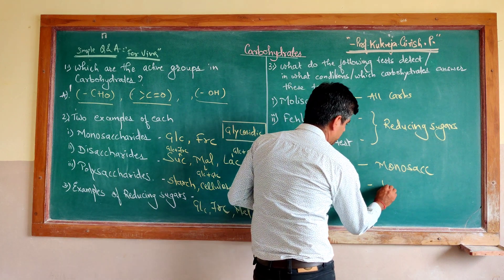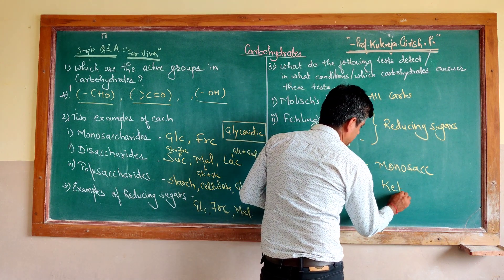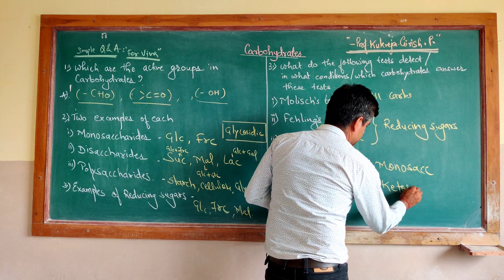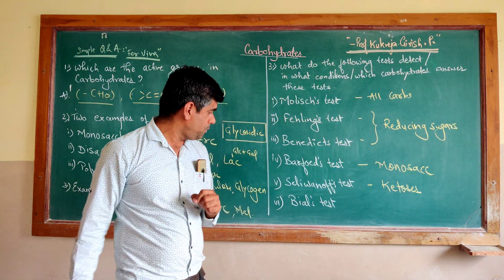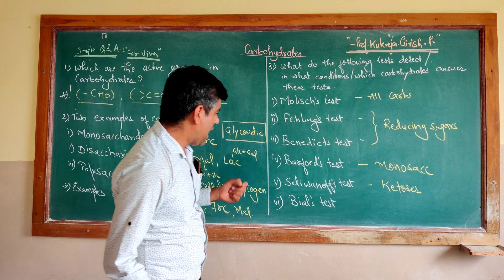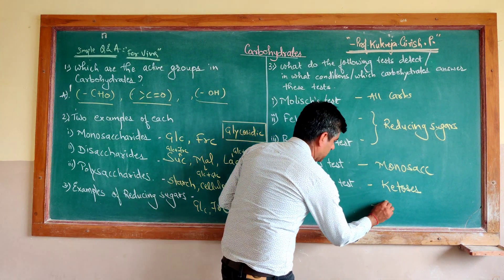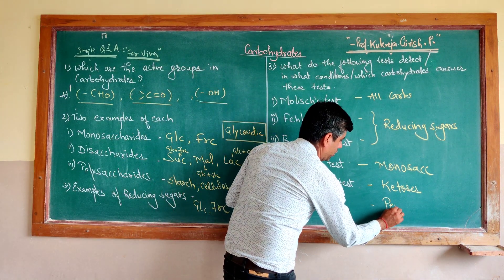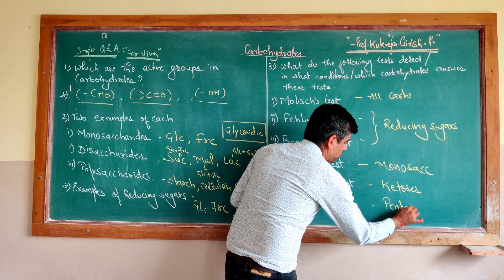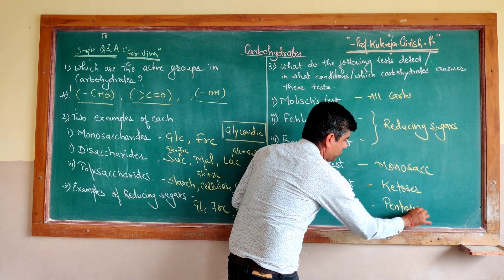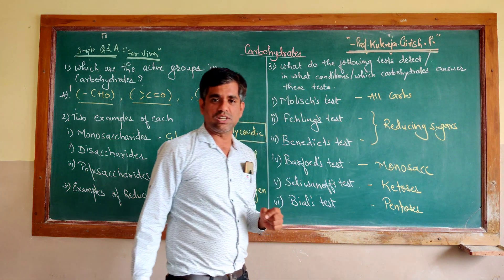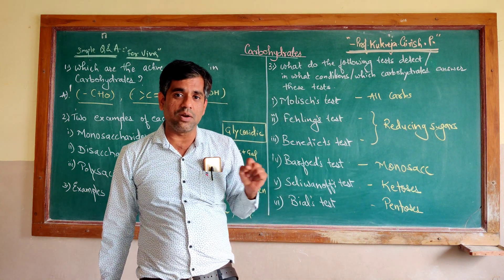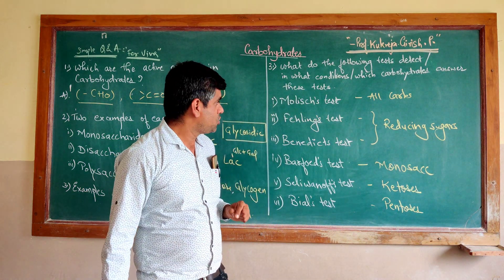The Seliwanoff's test is specific for ketoses — those which contain the ketone group. And the Bial's test is specific for pentoses, like ribose and ribulose, which contain five carbon atoms.